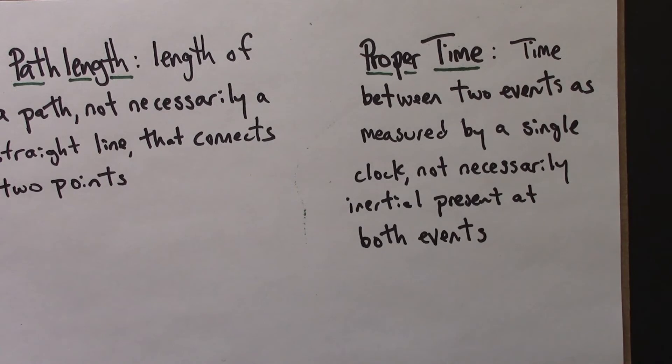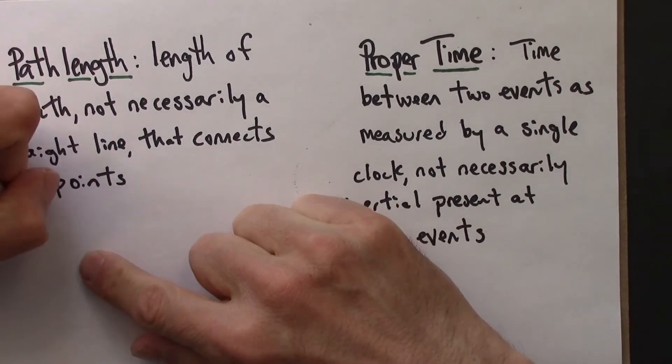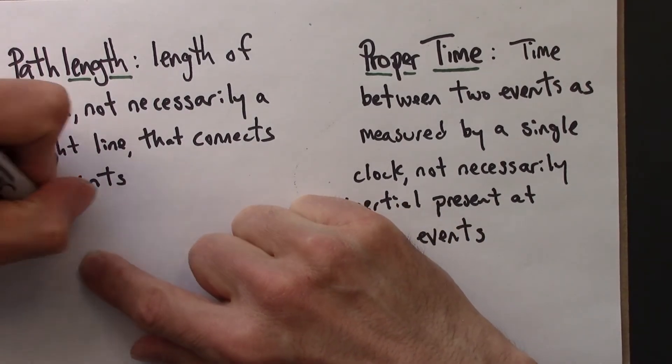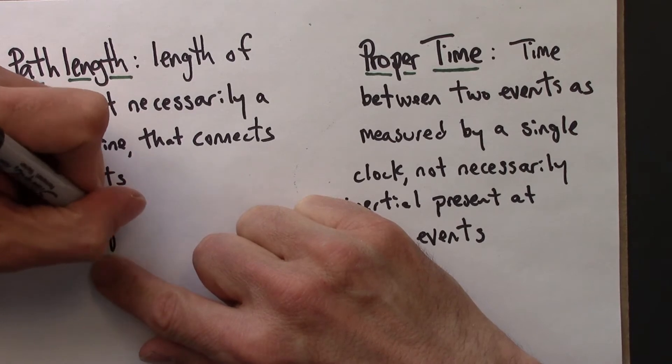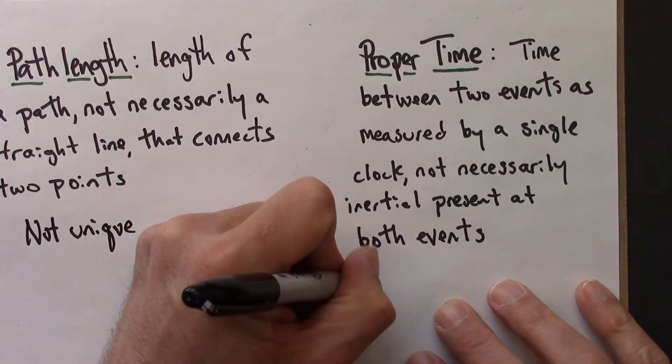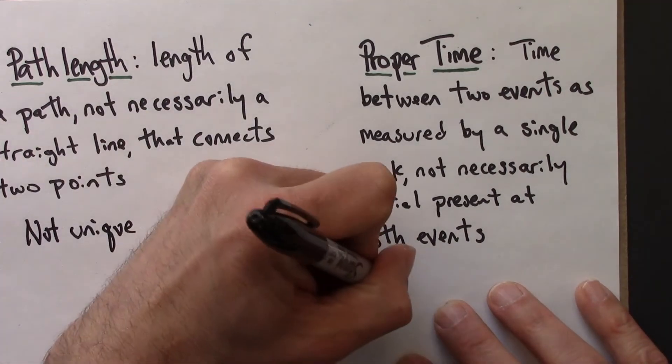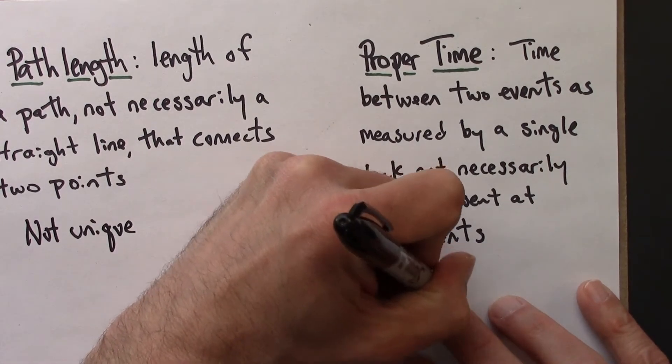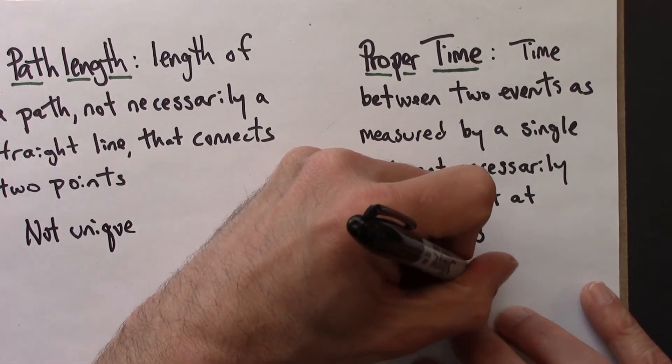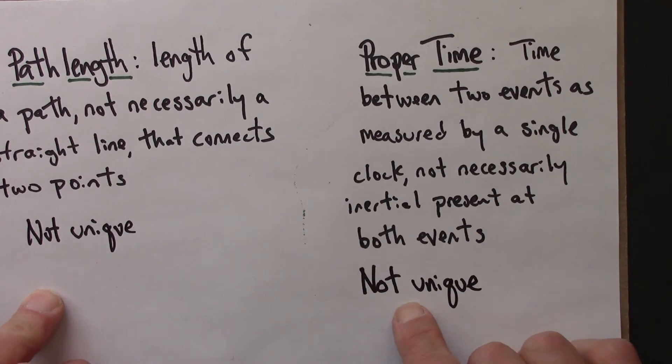So let me say a little bit more about this. So these are not unique, by which I mean they depend upon the path. So this is a property not just of point A and B, or event A and B, but the particular path you take between them.